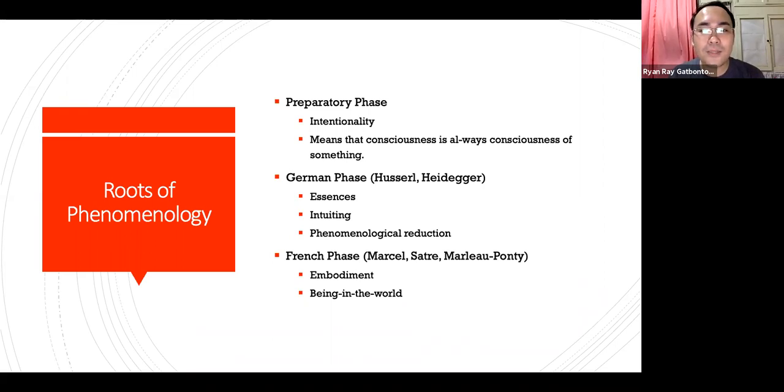During the German phase, Husserl and Heidegger are the primary philosophers or leaders for this phase. They identify the meaning of essences, the intuiting, and phenomenological reduction. When we say essences, the individual units of experiences outside the person. Intuiting meaning how they get in touch to that particular essence. And reduction is the ability to reduce and explain the particular experience or phenomenon that a person and the researcher might observe.